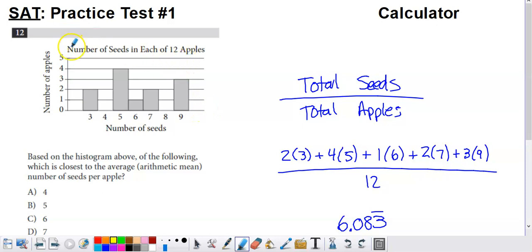I didn't even look at the title. I probably should have looked at that before I looked at anything else. Number of seeds in each of 12 apples. So they had 12 apples, figured out how many seeds were in each, and put the data into this bar graph here. I've called it a bar graph, they've called it a histogram.